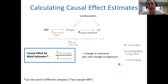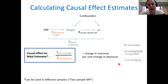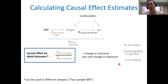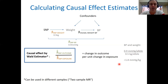The great thing about the Wald estimator is that you don't need a single sample of individuals where everyone has been measured on the SNP, the exposure, and the outcome. The real power of the method is that you can use it in something called two-sample MR, where you have associations in one sample of individuals between your SNP and your exposure, and in a completely independent sample of individuals you have estimates of the SNP-outcome association.